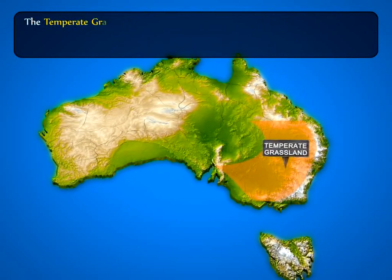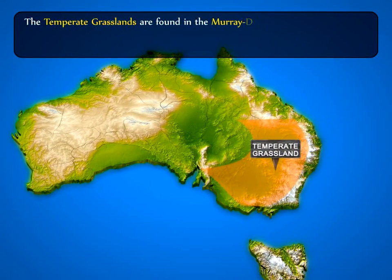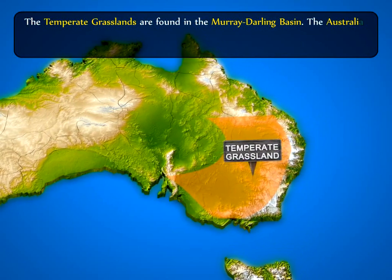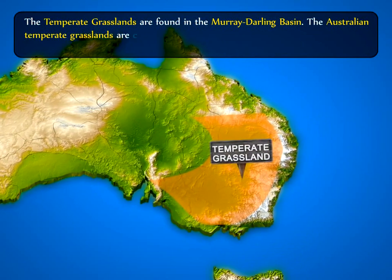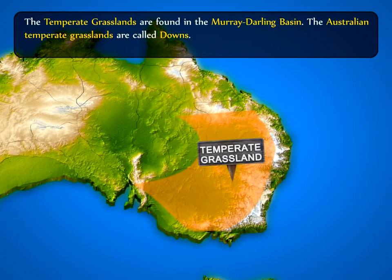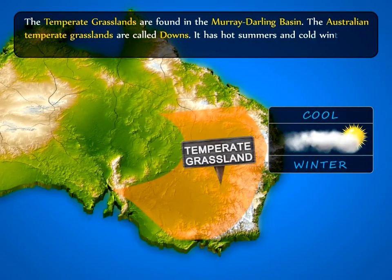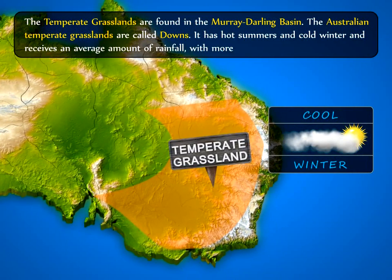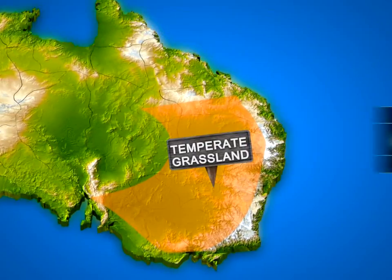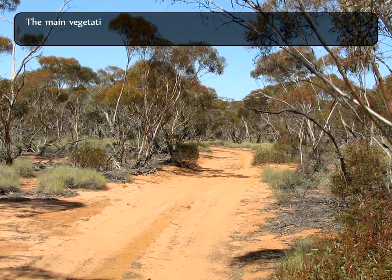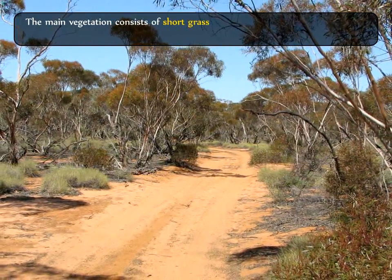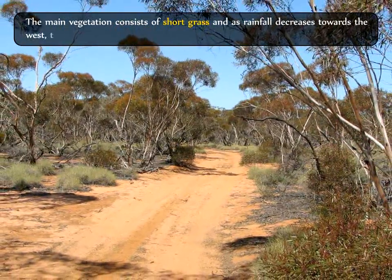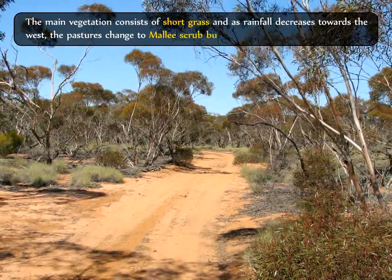The temperate grasslands are found in the Murray-Darling basin. The Australian temperate grasslands are called Downs. It has hot summers and cold winters and receives an average amount of rainfall with more rain in summer. The main vegetation consists of short grass, and as rainfall decreases towards the west, the pastures change to Mallee scrub bushes.